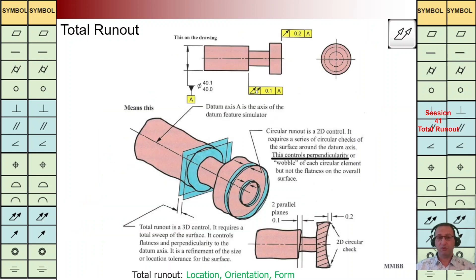In this slide we are going to compare total run out and run out. We can see total run out implemented for this flat surface — TZ is 0.1, back to A — meaning we control the perpendicularity of this flat surface with respect to datum axis A. But when we implement run out for this flat surface, we control each cross-section individually, not the whole surface.